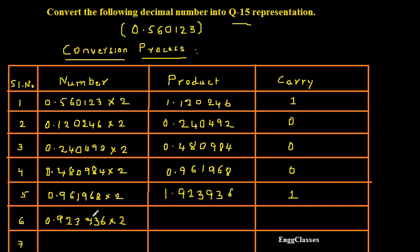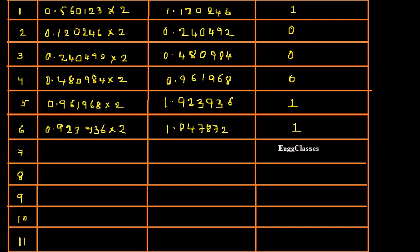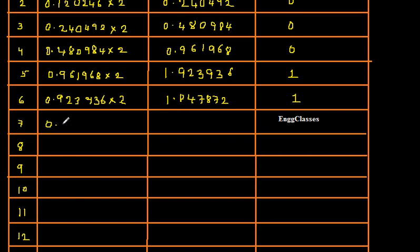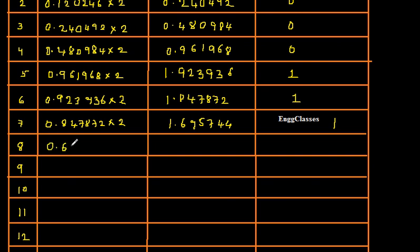I would consider 0.923936 and multiply this by 2, and I am going to get 1.847872. The integer part is 1, and I would consider that as the carry bit. So I am left with 0.847872. Multiply this again by 2 and I am going to get 1.695744. The carry bit is 1, and I am left with 0.391488.